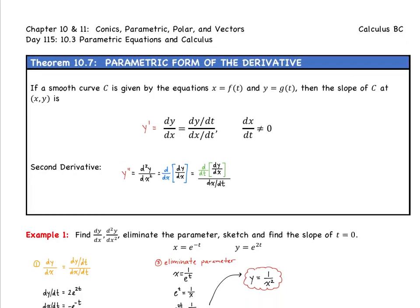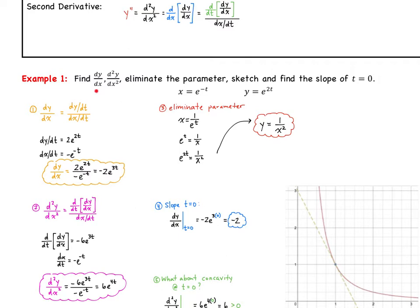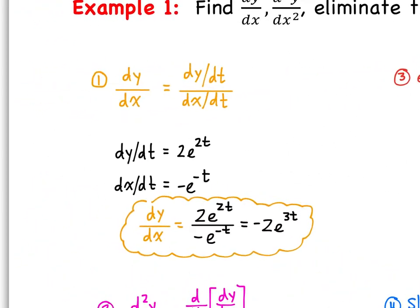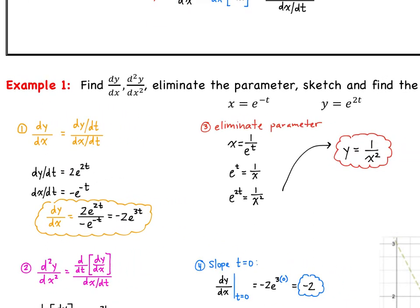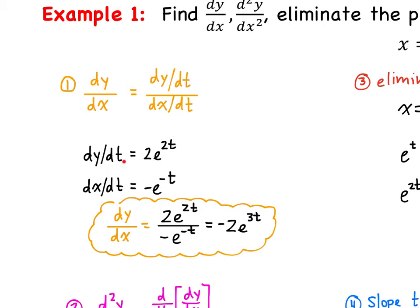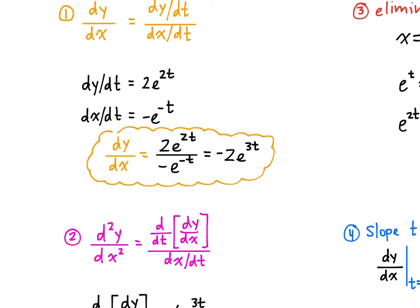Let's jump into our first example, where we want to find the first derivative, the second derivative, eliminate the parameter, sketch the curve, and find the slope at t = 0. We're given x = e^(−t) and y = e^(2t). For the first derivative, dy/dt = 2e^(2t) and dx/dt = −e^(−t). Putting those into the ratio and simplifying, we get dy/dx = −2e^(3t).